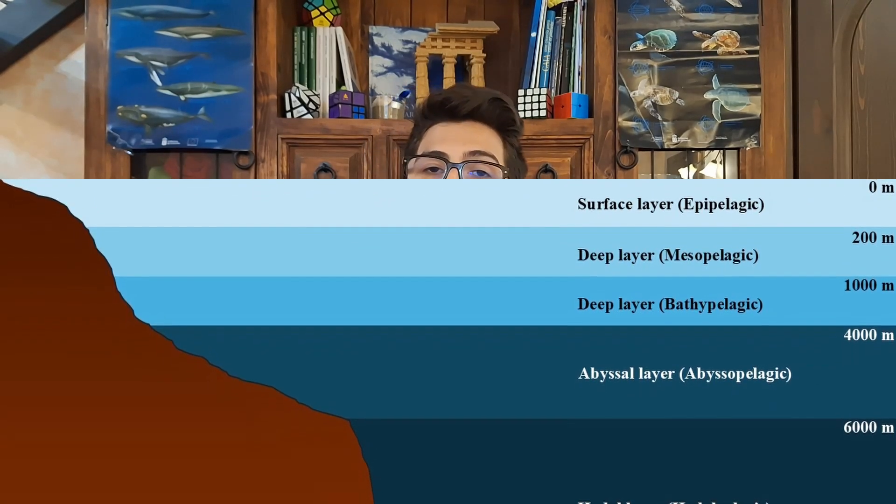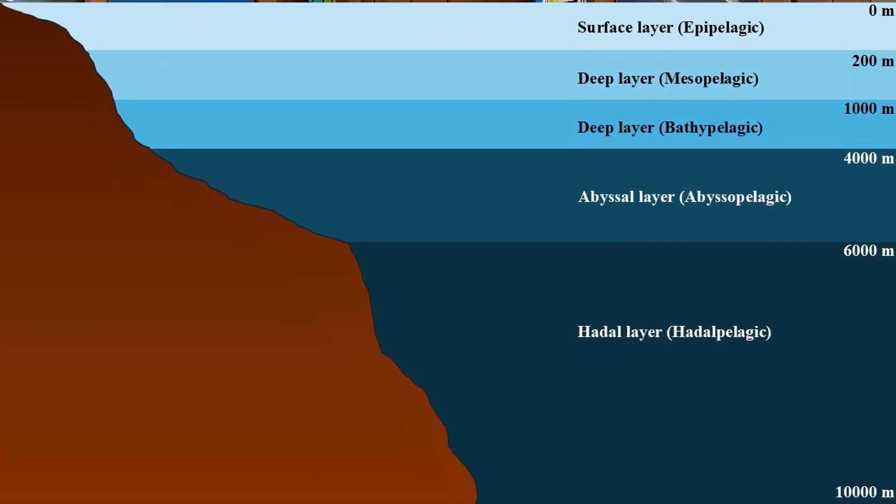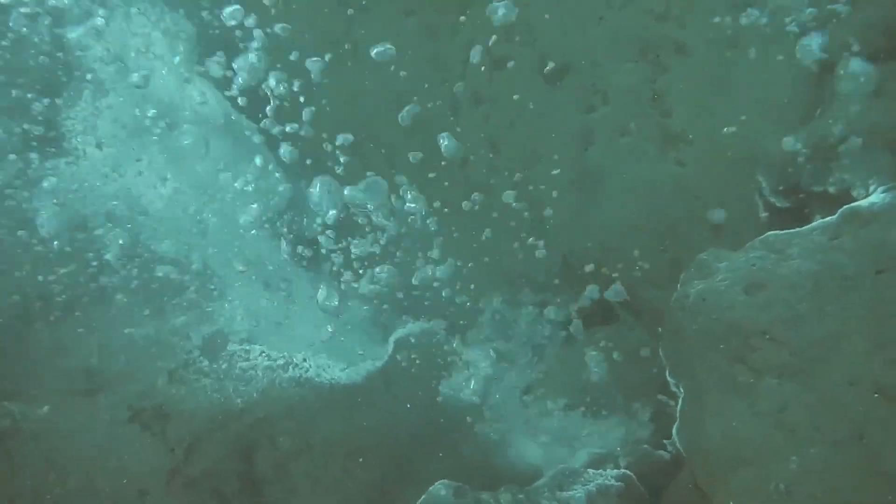After this point we will have the abyssal and the hadal zones, so more than 4000 meters. Here we will have temperatures near the freezing point and extreme pressure, around 1000 times the atmospheric pressure. The chemistry of these waters is stable, circulation is very slow, and we can find chemosynthetic life in the hydrothermal vent zone. The dissolved oxygen can also be limited at certain points at this depth.